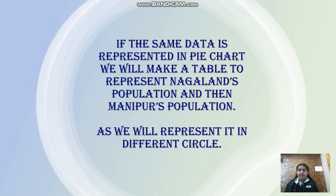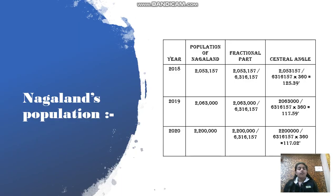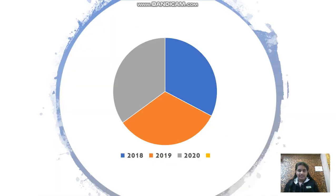If the same data is represented in a pie chart, we will make a table to represent Nagaland's population and then Manipur's population, as we will represent them in different circles. For Nagaland's population, I wrote year, then population of Nagaland, fractional parts, and then central angle. After receiving the central angle, I get a pie chart which will look like this. The blue color represents 2018's population, the orange color represents 2019, and the gray color represents 2020.